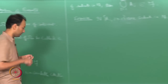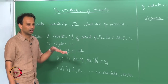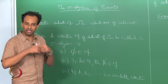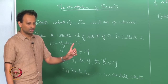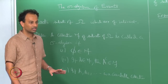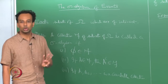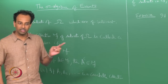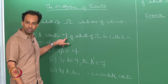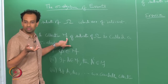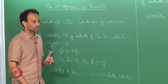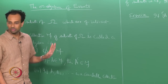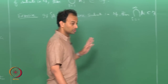One thing to make very clear: for both the algebra and the sigma algebra, I am not saying that the collection should contain only finitely many subsets. It can have any number of subsets, but it should be closed under finite unions for an algebra. Similarly, a sigma algebra can contain any number of subsets — even an uncountable infinity of subsets — but it should be closed under countable unions. The cardinality of F can be uncountable; the requirement is only closure under countable unions.